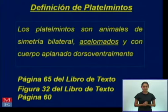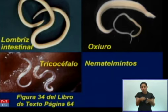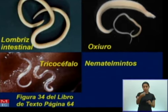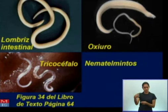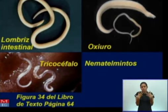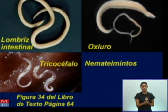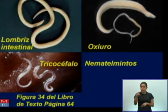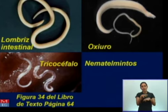Los invito a conocer cuáles son los representantes del grupo de los nematemintos. Tenemos a la lombriz intestinal, el oxiuro y también al tricocéfalo. Podemos ver que en la figura 34 del libro de texto, en la página 64, tienen estos representantes, inclusive tienen otros como el necátor. Son especies que deben conocer por la importancia y la relación que tienen con el hombre. Tanto en los platemintos como en los nematemintos hay especies parásitas que hacen daño al hombre.